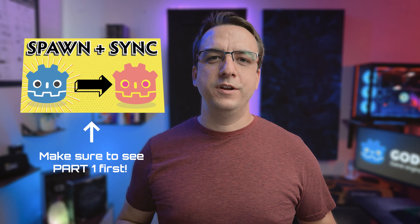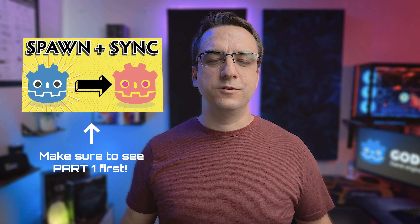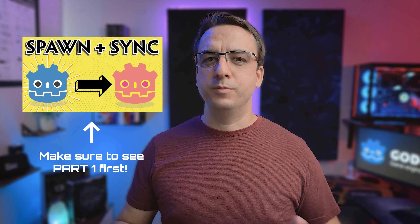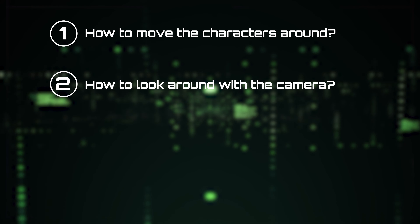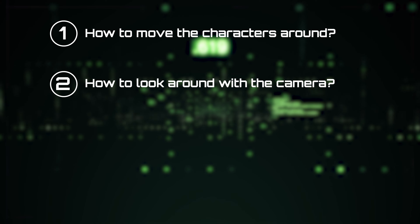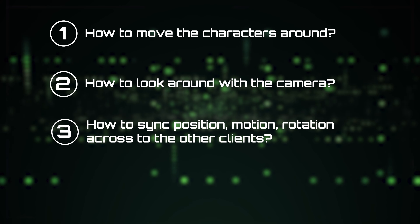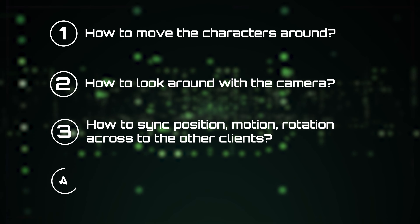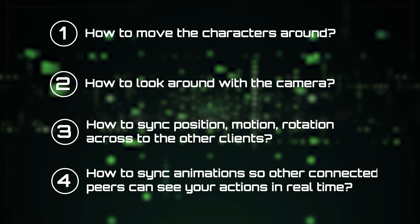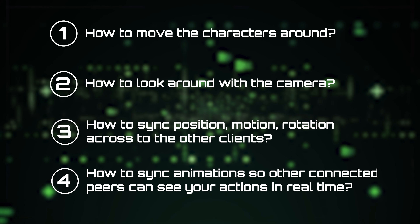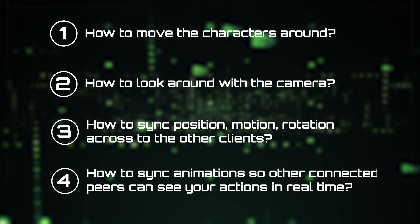In my last Godot multiplayer video, we had a look at how to spawn players into the world and also synchronize their position, but it was very basic. So this week I want to look at how to move your characters around, look around with the camera, and have that position, motion, and rotation synced across to the other clients. I also want to look at how to sync animations like idle, jumping, walking, and running so that the other peers can see your actions and movements in real time. So let's dive in.